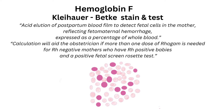The Kleihauer-Betke stain and test is an acid dilution test on post-partum blood, used to detect fetal cells in the mother, reflecting fetal-maternal hemorrhage expressed as a percentage of whole blood. Calculations aid the obstetrician in determining if more than one dose of RhoGAM is needed for RH-negative mothers who have RH-positive babies and a positive fetal screen rosette test. We'll learn more about this in blood banking.